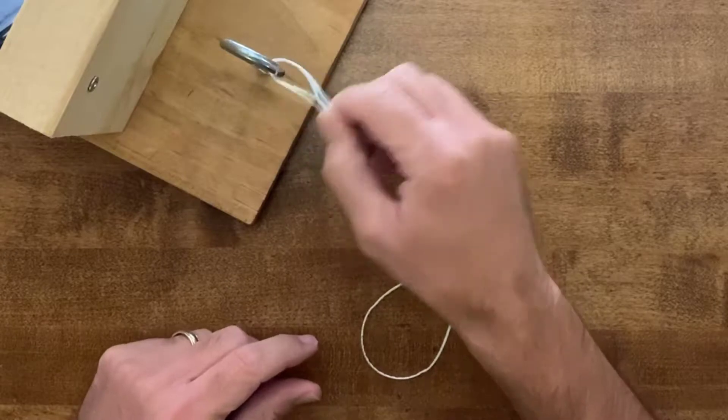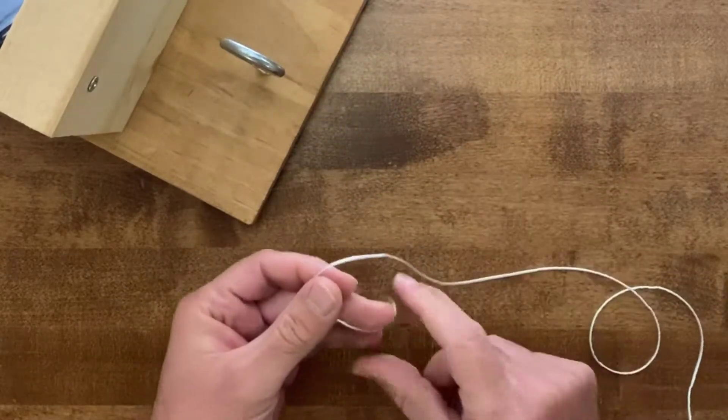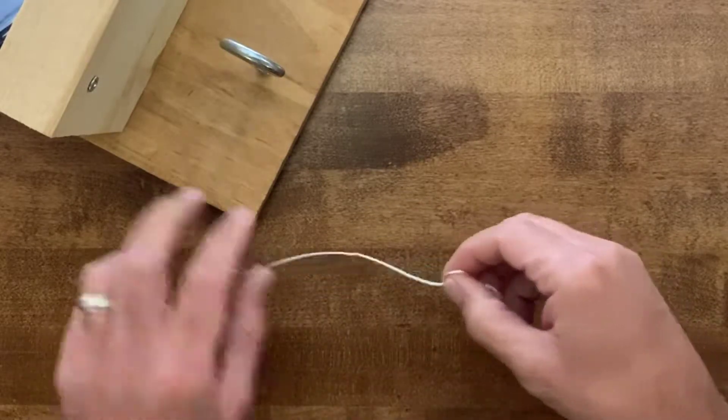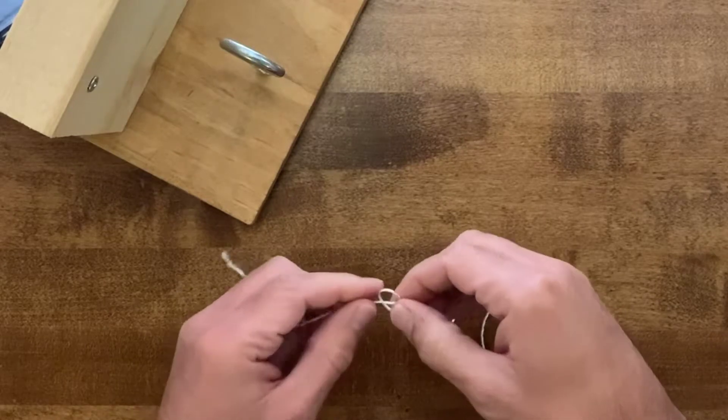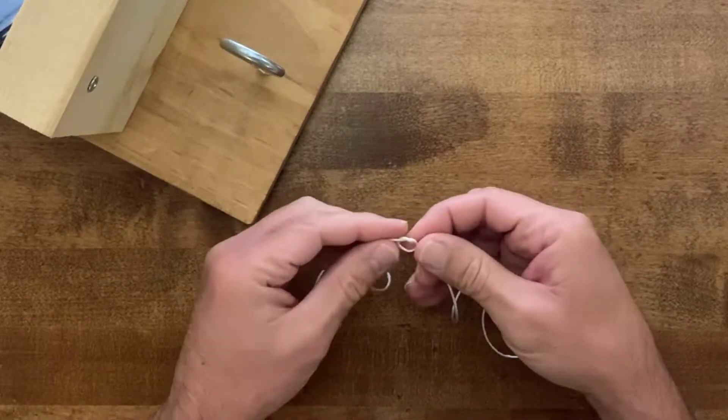We want to start this knot off by actually making an overhand knot in the line first. You want to do that about six inches or so up the line.